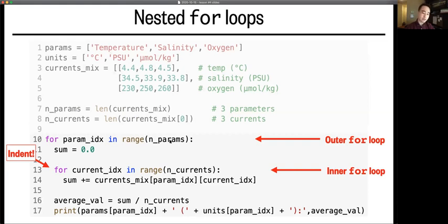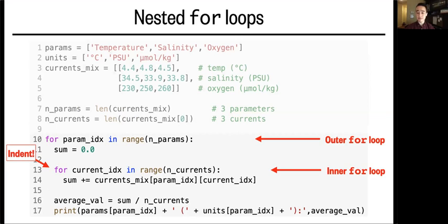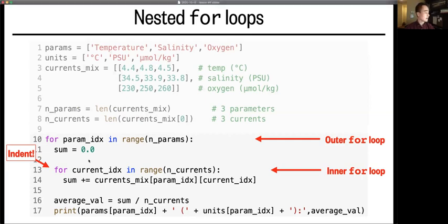And since the definition of an average is the sum of the values divided by the total number of values, we have to create a variable to keep track of that sum, which will get reset to zero every cycle of this outer for loop, because it's inside the loop here.